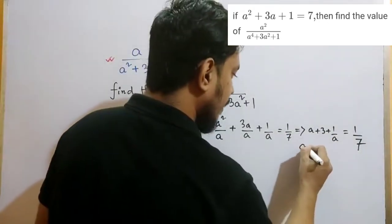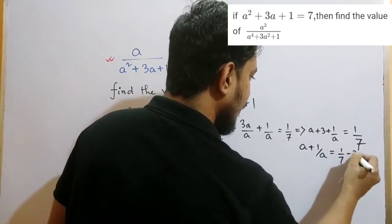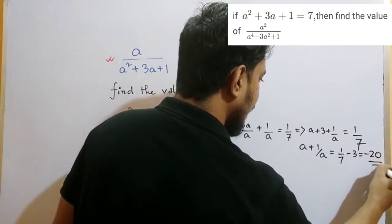So a plus 1 by a, which is equal to 1 by 7 minus 3, that means minus 20 by 7.